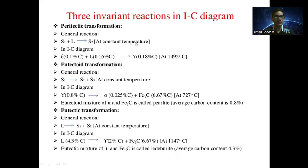This transformation, where one solid plus liquid gives another solid at constant temperature, is called the peritectic transformation. For solid one (delta), the carbon content is 0.1 percent; for the liquid, it is 0.55 percent carbon; and the new solid S2, which is austenite, contains 0.18 percent carbon at 1492 degrees Celsius.